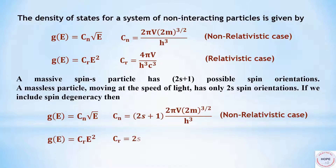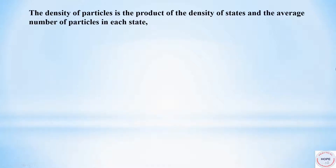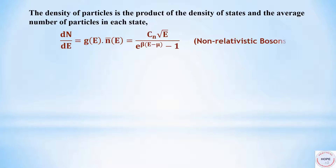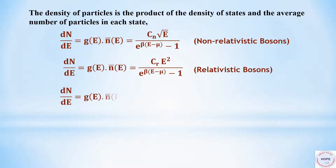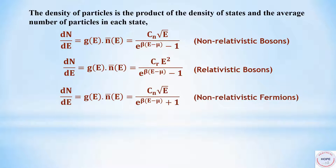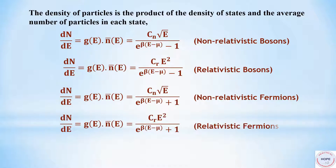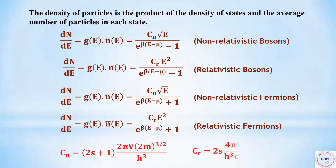The relativistic case is for massless particles moving at the speed of light. The density of particles is the product of the density of states and the average number of particles in each state. So dN by dE is the product of G and N-bar of E. These are the four expressions for non-relativistic bosons, relativistic bosons, non-relativistic fermions, and relativistic fermions.